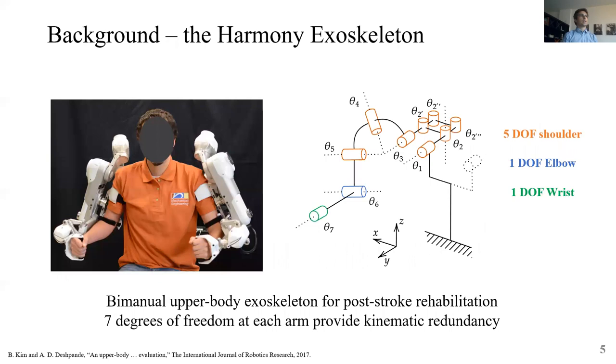To validate the method we use the Harmony exoskeleton. Harmony is a bimanual upper body exoskeleton for post-stroke rehabilitation and as shown in figure on the right it has seven degrees of freedom at each arm. Five at the shoulder, one at the elbow and one at the wrist. In this way since the number of the degrees of freedom of the robot is higher than the three-dimensional position of the end effector, Harmony is a kinematically redundant problem.